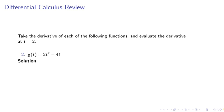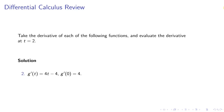Example 2, take the derivative of g of t equals 2t squared minus 4t. The solution is given by g prime of t equals 4t minus 4. G prime of 0 equals 4.